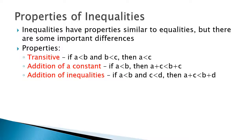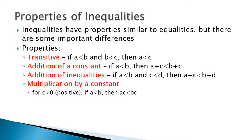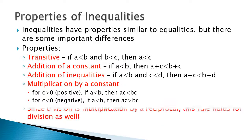Addition of inequalities: if A is less than B and C is less than D, then adding the two lesser numbers together will still be less than the two greater ones added together. Multiplication by a constant — this is where it gets a little weird. If you are multiplying both sides by a positive number, if A is less than B, then AC is less than BC — no problem. However, if you are multiplying by a negative number, you must reverse the inequality sign. Any time you multiply or divide both sides of an inequality by a negative number, you must reverse the inequality sign.